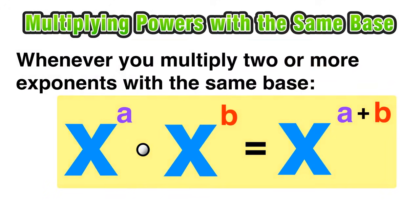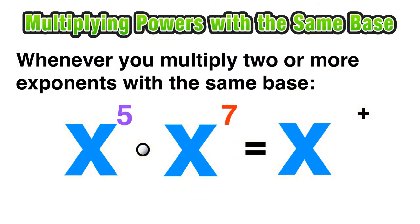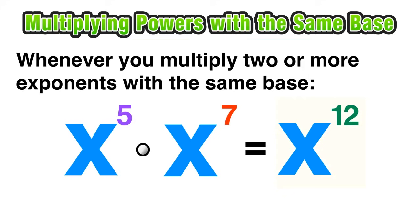Now we can apply that law to one final example. Instead of variables as exponents, let's replace them with real numbers. If we have x to the fifth times x to the seventh, since the bases are the same, we can simplify this by adding the two exponents — 5 plus 7 — which results in a simplified answer of x to the 12th.